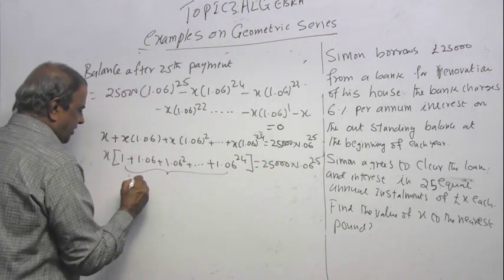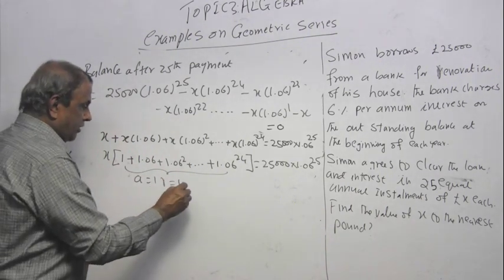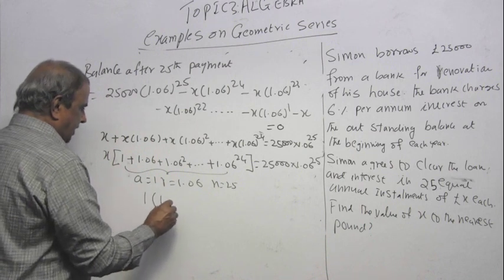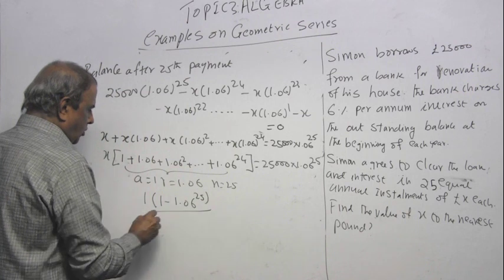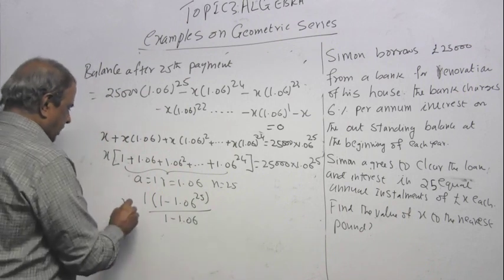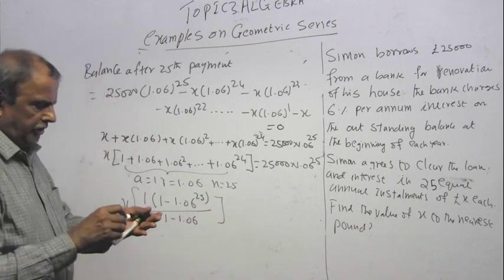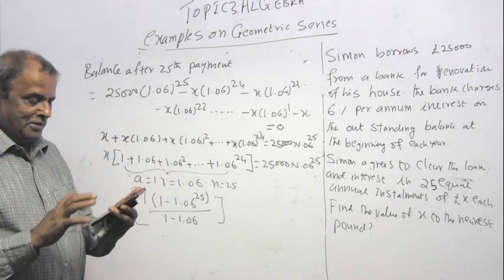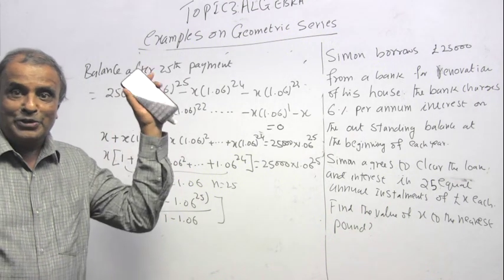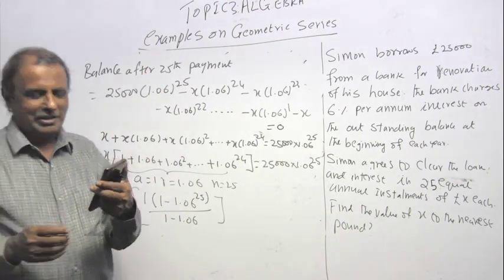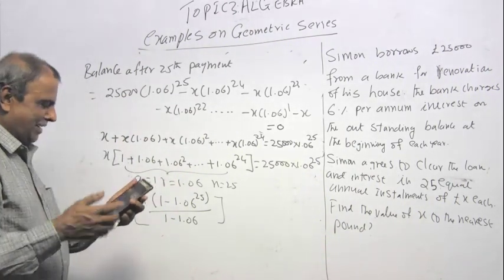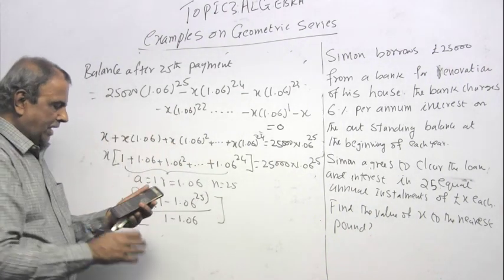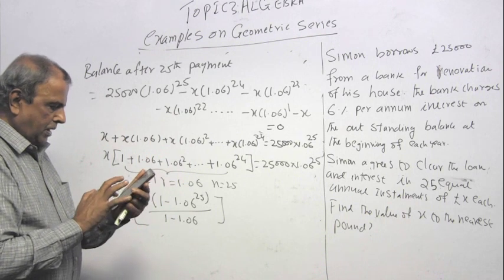What is SN? A times 1 minus R power N over 1 minus R times X. Let us work that out using a calculator. I am using my phone as a calculator. I will do 1.06 power 25. What are my glasses? I do not want to commit a mistake in reading the values.